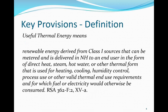The ASTM is developing a heat meter standard, but it is not due out until probably the end of this year. The statute defines useful thermal energy as renewable energy derived from class one sources that can be metered and is delivered in New Hampshire to any end user in the form of direct heat, steam, hot water, or other thermal form used for heating, cooling, humidity control, process use, or other valid thermal end use, and for which fuel or electricity would otherwise be consumed. Metering is the key requirement for us.